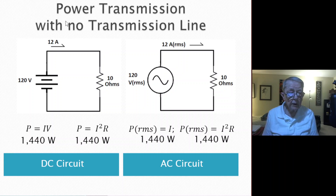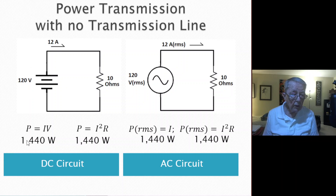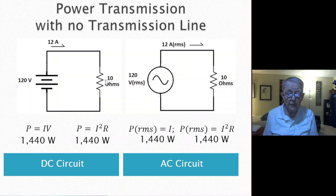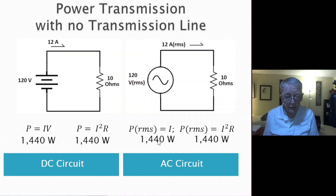Now let's look at power transmission with no transmission line. At 120 volts into a 10-ohm load, you get 12 amps, so the source power is 120 × 12 = 1440 watts. The power dissipated is I²R = 12² × 10 = 1440 watts — 100% of the power reaches the load. The same result holds for AC using RMS values: 120 × 12 = 1440 watts. They're identical; there is no advantage either way.